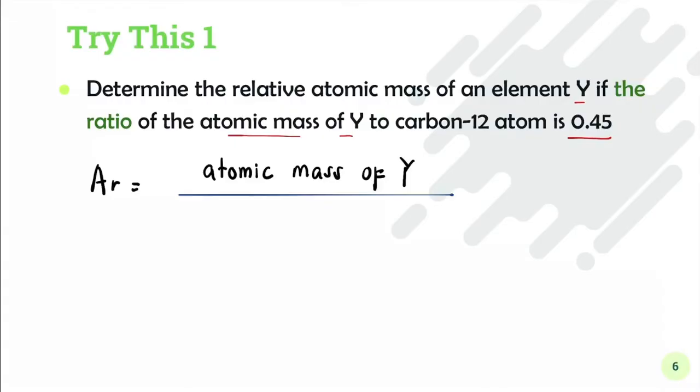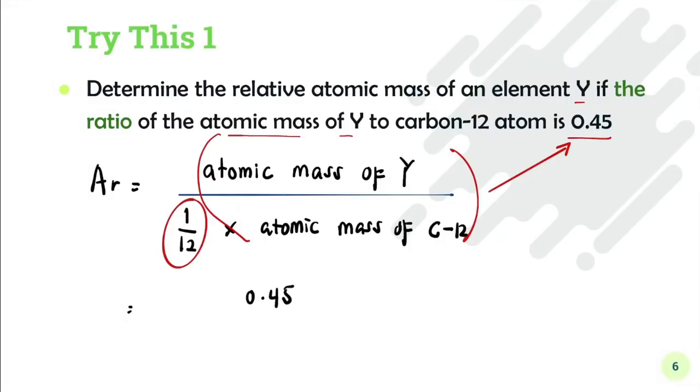We'll get something like this. Now look back at the 0.45 - that's the ratio. So atomic mass of Y over atomic mass of carbon-12 equals 0.45. We insert this into the formula.